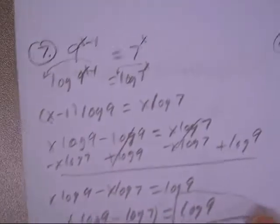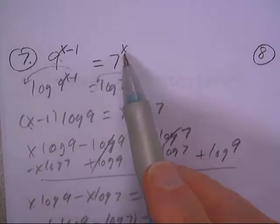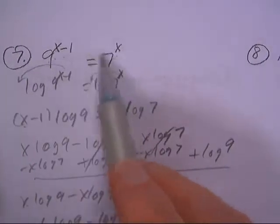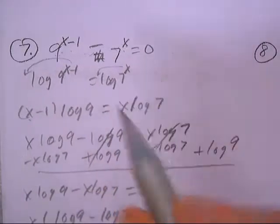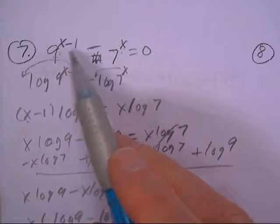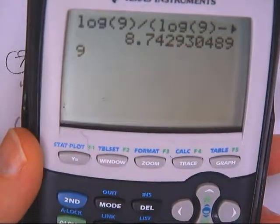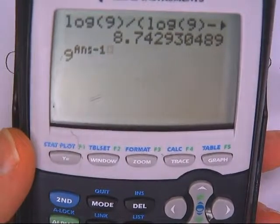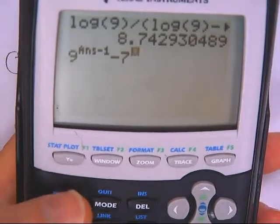Let's see if it works. As soon as I hit enter, it's going to use my answer. So I'm going to subtract these two. To check it, I'll do 9 to the answer minus 1 power, and subtract 7 to the answer power.